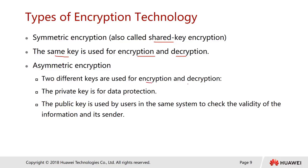In asymmetric encryption, two different keys are used for encryption and decryption. This is also known as public key infrastructure. Each party — whether sender or receiver — generates a pair of keys: the public key and the private key. The private key is never exposed or shared, while the public key can be openly visible over the internet. The private key is for data protection, and the public key is used to check the validity of the sender's information.